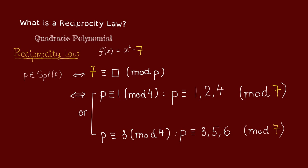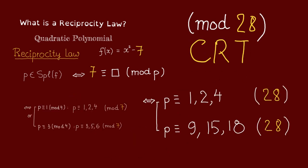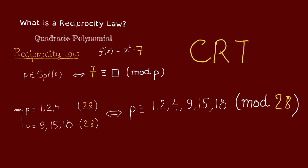So maybe we want to combine the condition modulo 4 and modulo 7 into just one modulus, modulo 28. And we can do that by Chinese remainder theorem. We can translate this condition into this condition modulo 28 and this condition into this condition modulo 28. And now we can just combine them into one condition modulo 28.